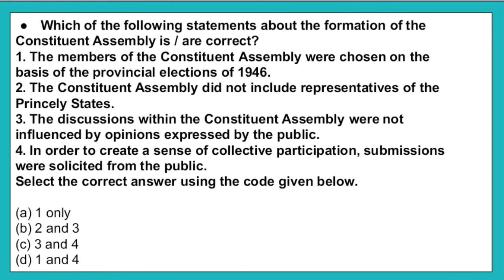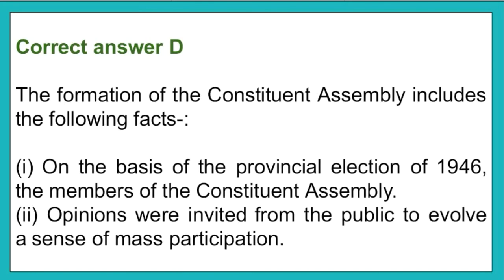The next question: Which of the following statements about the formation of the constitution assembly is or are correct? One: the members were chosen on the basis of the provincial elections of 1946. Two: the constitution assembly did not include representatives of the princely states. Three: discussions were not influenced by public opinion. Four: submissions were solicited from the public to create a sense of collective participation. Select the correct answer from the code given below. Option A: one only. Option B: two and three. Option C: three and four. Option D: one and four. The correct answer is option D. The members were chosen based on the provincial elections of 1946, and opinions were invited from the public to involve a sense of mass participation.